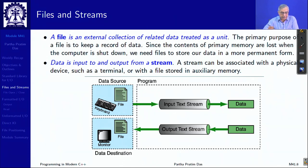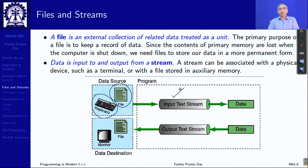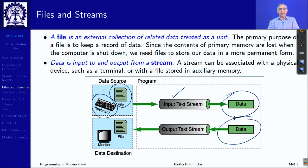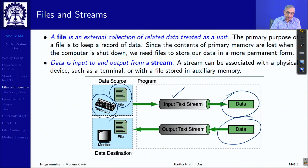A stream is an abstract concept — the name derives from the natural English word for something that keeps flowing. It can be associated with a physical device like a terminal, printer, or file in auxiliary memory. Input devices like keyboard or file create an input text stream that brings data into memory. Similarly, data in memory is sent through an output text stream — you do not go back, you keep moving forward — to a file, monitor, or printer.